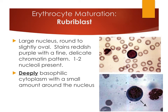The rubroblast has a very large round nucleus with a reddish tone and fine chromatin; nucleoli are sometimes present. The characteristic of this cell is the deeply basophilic — very, very blue — cytoplasm with a relatively small amount surrounding the large nucleus.